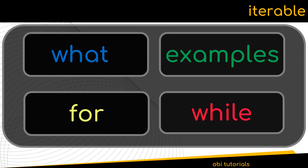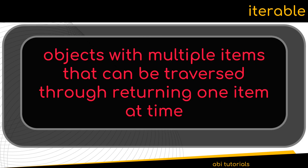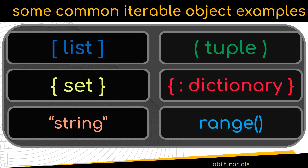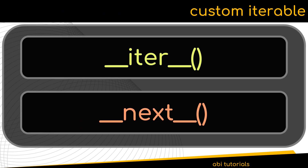The next topic we are going to discuss are iterables. Here we will see what an iterable is, examples of iterable type objects, and finally we will look into the for and while loops. An iterable is a Python object with multiple items that can be traversed through and has the capability to return one item at a time. Let's now see some common iterable objects that we use in Python. Python also supports custom iterables — that is, you can create your own iterable object. To do so, you will have to implement the __iter__ and __next__ functions within your object. We will create custom iterable objects in upcoming sessions.